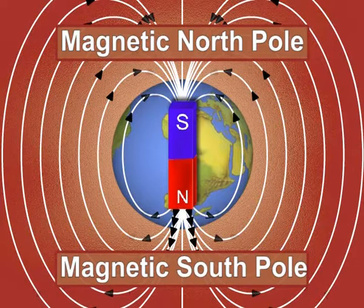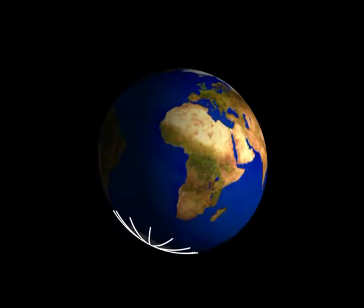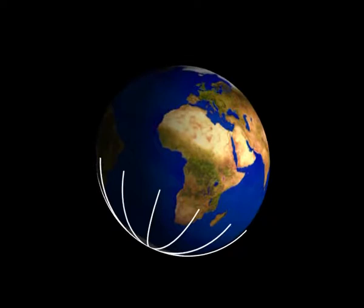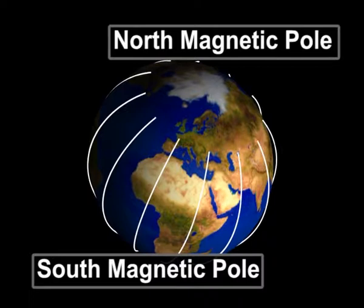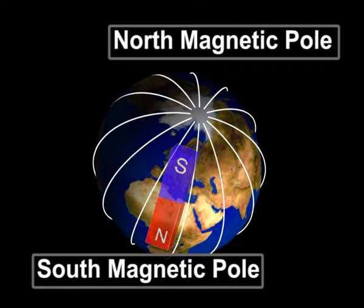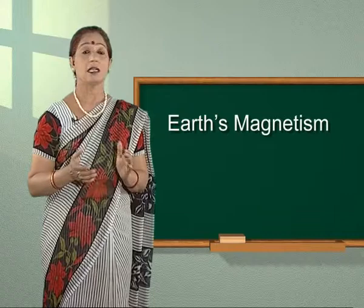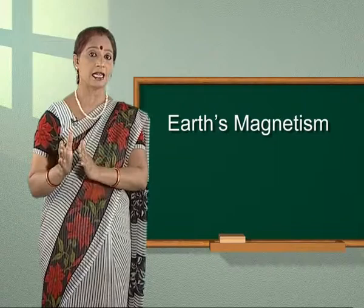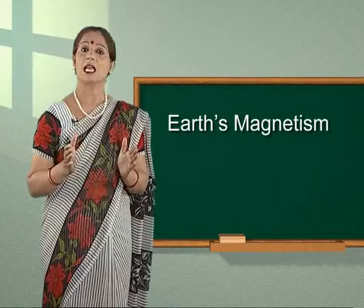There is a confusion regarding the pole nomenclature. If we look at the magnetic field lines of the Earth, it can be observed that unlike the case of a bar magnet, the field lines come out from the south magnetic pole and go into the Earth at the north magnetic pole. That is, the south pole of Earth's magnet is towards geographic north, and the north pole of Earth's magnet is towards geographic south. The convention arose because the magnetic north was in the direction to which the north pole of a magnetic needle pointed; the north pole of a magnet was so named as it was the north-seeking pole.